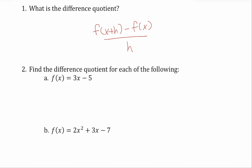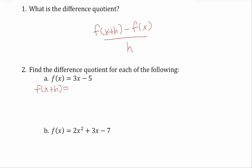In number two, you're going to do two difference quotients — one for a linear function like part a, and one for a quadratic like part b. Let's start with the linear function. First, calculate f of x plus h. We're going to take out our original input and replace it with x plus h. So that's three times x plus h minus five. Now let's distribute the three, so that's three x plus three h minus five.